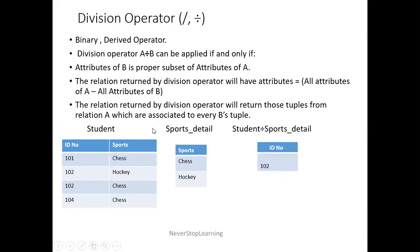Let's see with this example — Student and Sports. Here I'm having ID number and Sports as two columns, and in the Sports detail table I'm having one column, Sports. Table B should be a proper subset of Table A, meaning if B has Sports column, A should also have Sports column. The values present in B — Chess and Hockey — should only be those values present in A's Sports column. If Badminton or Table Tennis appear in B but not in A, then B is not a proper subset of A.